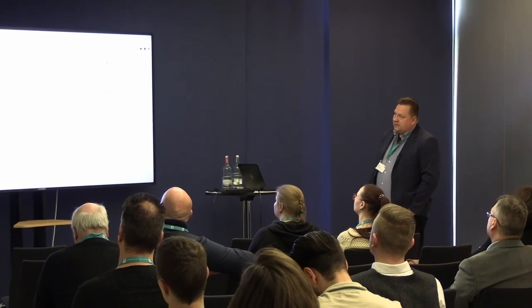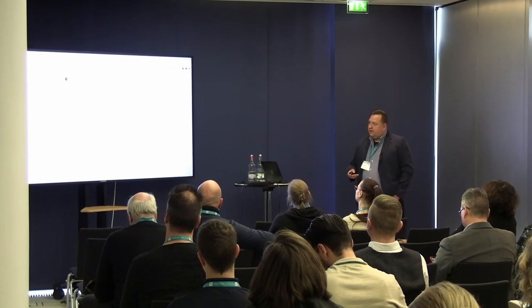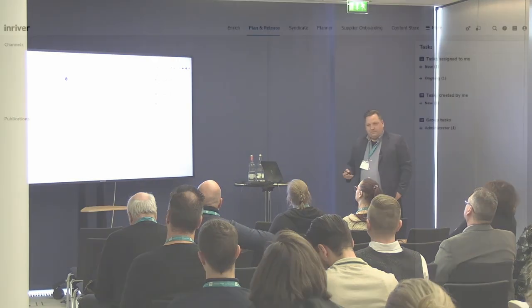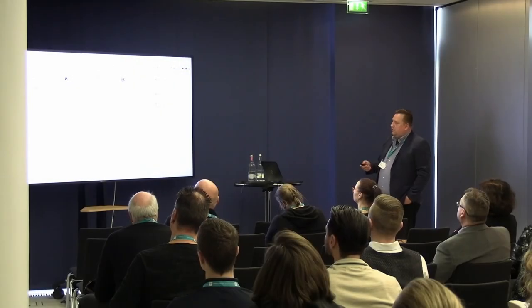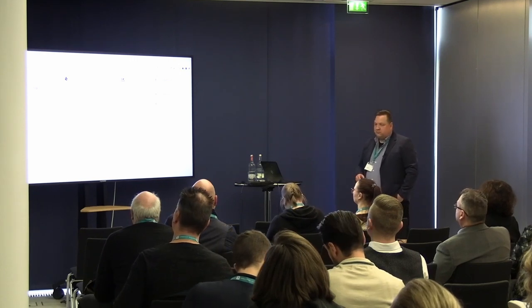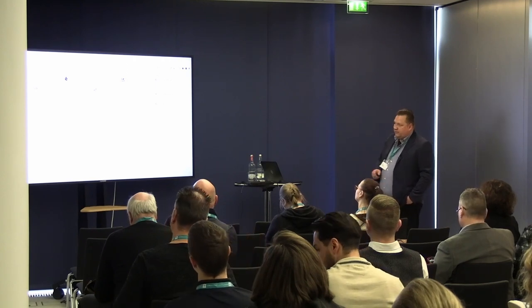What else can a channel be? A content store. A content store is InRiver functionality that allows you to release product data like in a web shop. The data can be compiled in a channel and then released via that channel. You can grant access to various persons — it's a web shop for data. Product data can be released or consumed as images or as an Excel spreadsheet for retailers, for customers. You can create different content stores just the way you like it. It is also possible to create a channel for Google — to push your data to Google — and for other marketplaces.